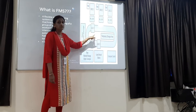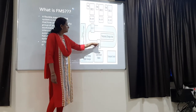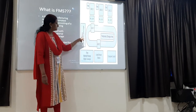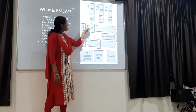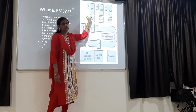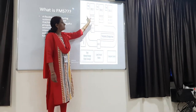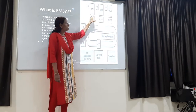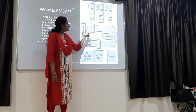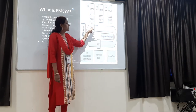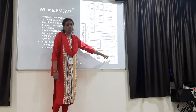The system uses automated guided vehicles and robots. There is a raw material storage area. There are three workstations: CNC1, CNC2, and CNC3. These machines are located at the same place, and the guided vehicles move from one station to another as per the signals received from the computer control.